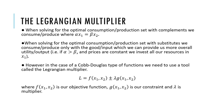When solving for the optimal consumption or production set with substitutes, we consume or produce with the good or input which can provide us more overall utility or output. For example, if α is greater than β and prices are constant, we invest all our resources in X1. However, in the case of Cobb-Douglas type functions, we need to use a tool called the Lagrangian multiplier.